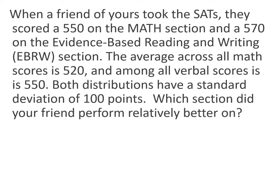As an example, let's consider your friend who recently took the SATs. They scored a 550 on the math section and a 570 on the writing section. We want to consider the question: which section did they perform relatively better on? Obviously, they got the better score on the writing section. However, the mean score for math was 520 and the mean for verbal was 550, with a standard deviation of 100 for both. So let's find z-scores for both.